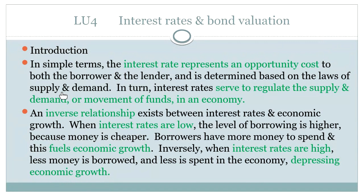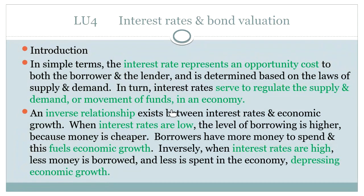So the interest rate represents an opportunity cost to both the borrower — the person getting the money — and the lender, which in this instance would be the bank giving you the money. And it is determined based on the laws of supply and demand. An interest rate is the price of money, just like the price of peas or oranges. And interest rates serve to regulate the supply and demand of funds in an economy.